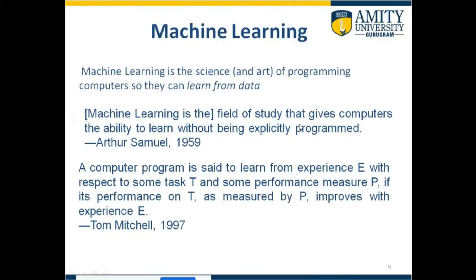Now let's see what exactly is the meaning of machine learning. Machine learning, if you simply see, is the learning of machine — how you make a machine learn. There are a number of definitions. Machine learning is the science of programming computers so that they can learn from data. A lot of data we provide to the machines and they can learn from that. Arthur Samuel's definition from 1959: it is a field of study that gives computers the ability without being explicitly programmed. It means we are not programming the computers, but the way we learn right from childhood — from school to college — we keep learning, not just from school but from our environment also.